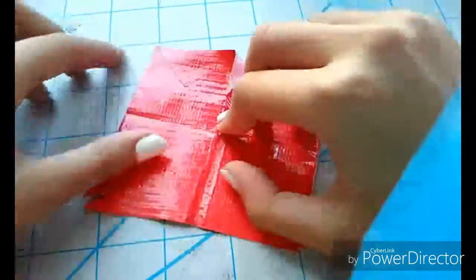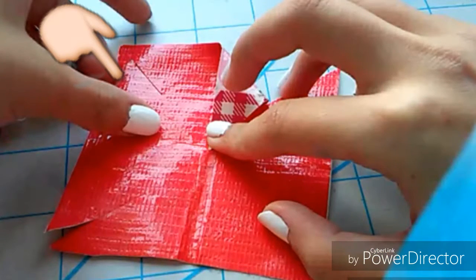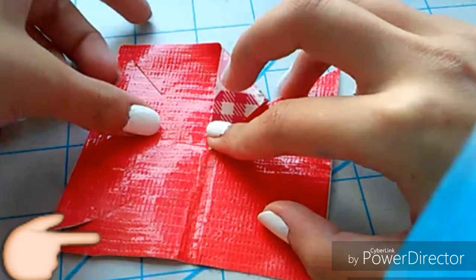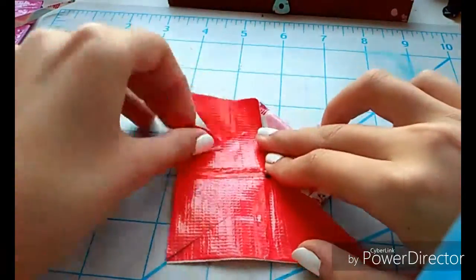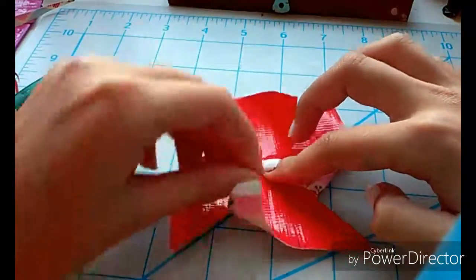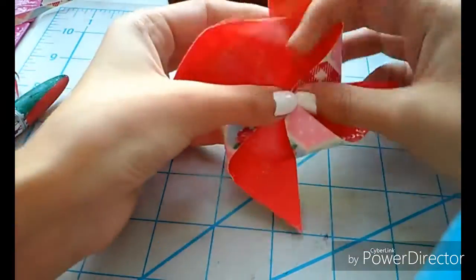So then you're going to take every other one of these little marks, so this one, this one, and then this one that my thumb is covering, and you're going to fold those into the center just like this. So that would be every other little corner.